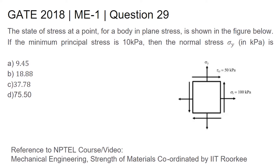In this video, we will solve question 29 from the first set of the mechanical engineering question paper conducted in GATE 2018. The question is: the state of stress at a point for a body in plane stress is shown in the figure below. If the minimum principal stress is 10 kPa, then the normal stress σy in kPa is: option a) 9.45, option b) 18.88, option c) 37.78, option d) 75.50.